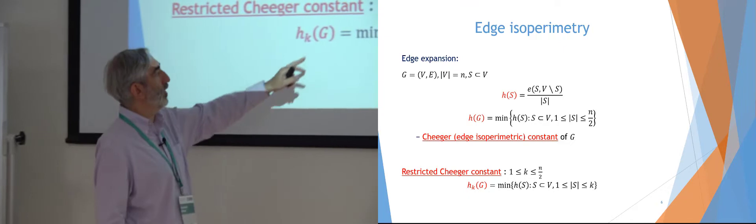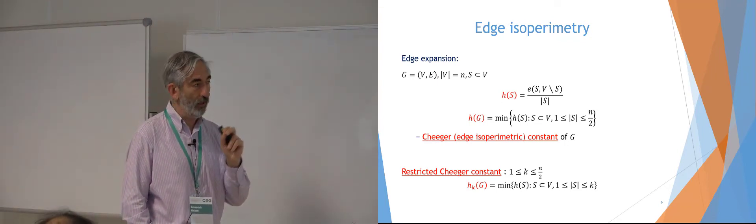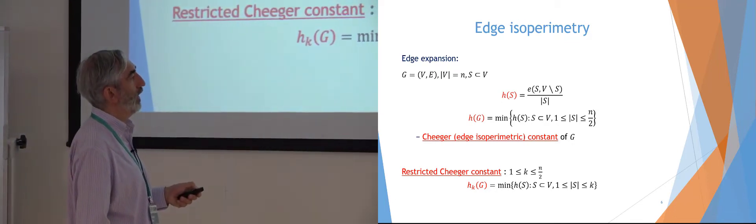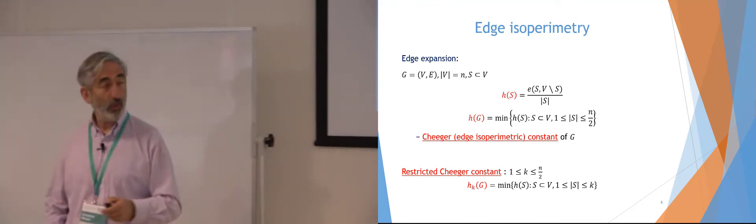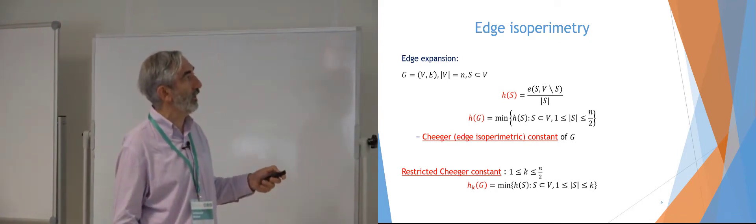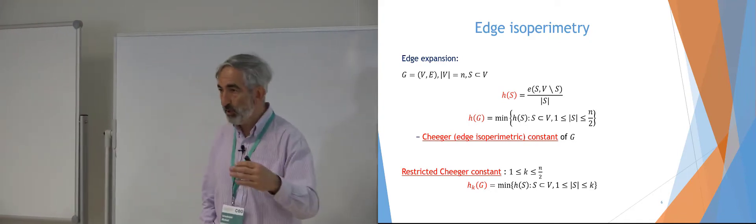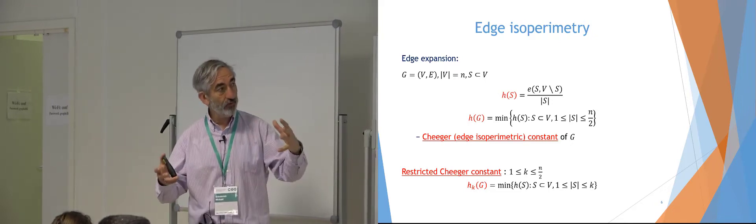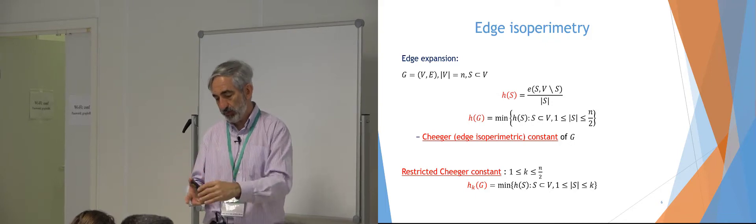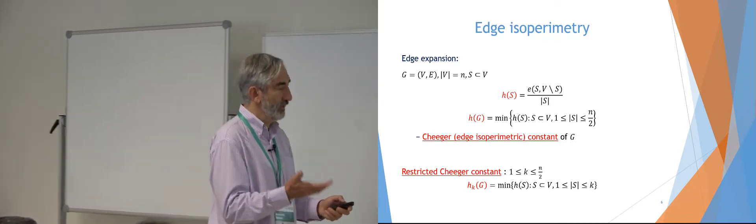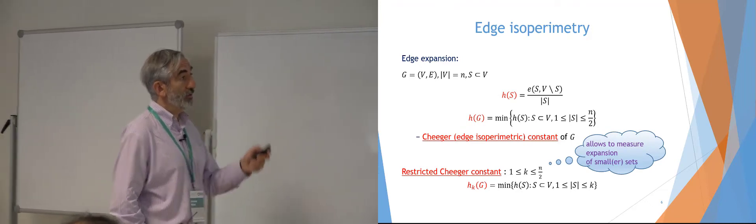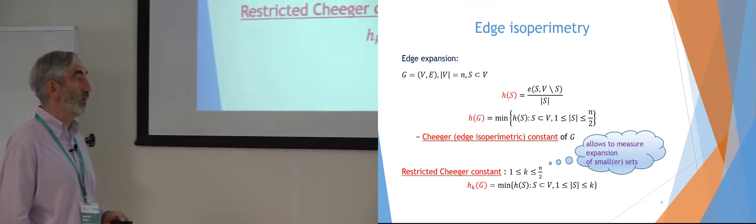For our purposes we also need the quantity H_K(G): for a particular number K between 1 and N/2, H_K(G) is the minimum of H(S) over sets of cardinality at most K. This is helpful because sometimes we need to say that the expansion of smaller sets is actually better than the global expansion H(G). If you have a small set, you typically expect many edges going out of it, whereas for a large set of size N/2 you expect roughly half the edges going outside.